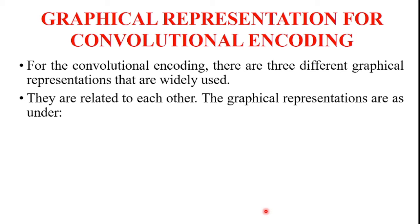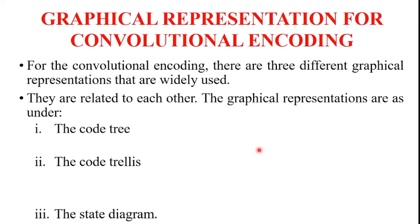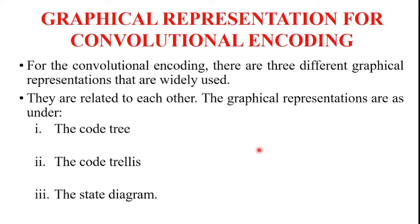Hi everyone, welcome back to Prakasham Tutorials. In this video I am going to discuss about graphical representation for convolutional encoding. For convolutional encoding there are three different graphical representations that are widely used, and they are related to each other. The three types are: first, code tree; second, code trellis; and third, state diagram.